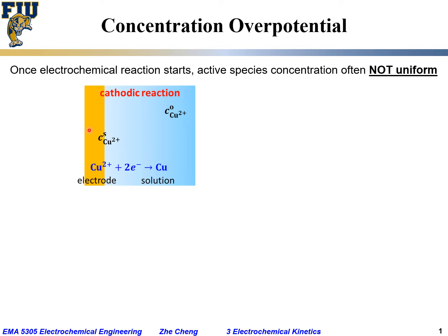For example, we have a copper electrode, and in the solution there is copper ion. The cathodic reaction would be Cu²⁺ ion combined with 2 electrons to form copper metal. The copper 2+ ion concentration at the electrode surface is defined as Cs, while the copper 2+ ion concentration deep within the solution — or in the bulk of the solution — would be C0.